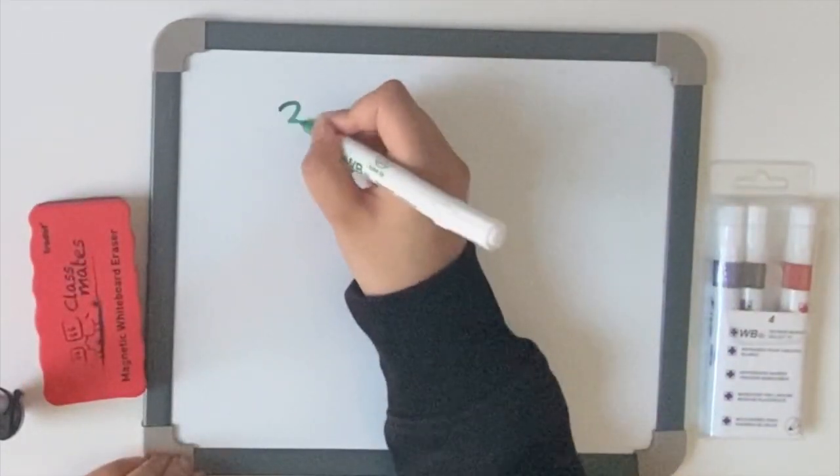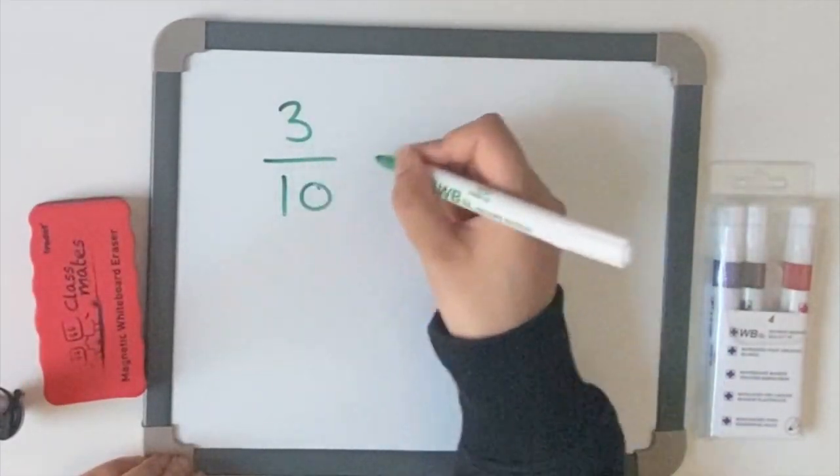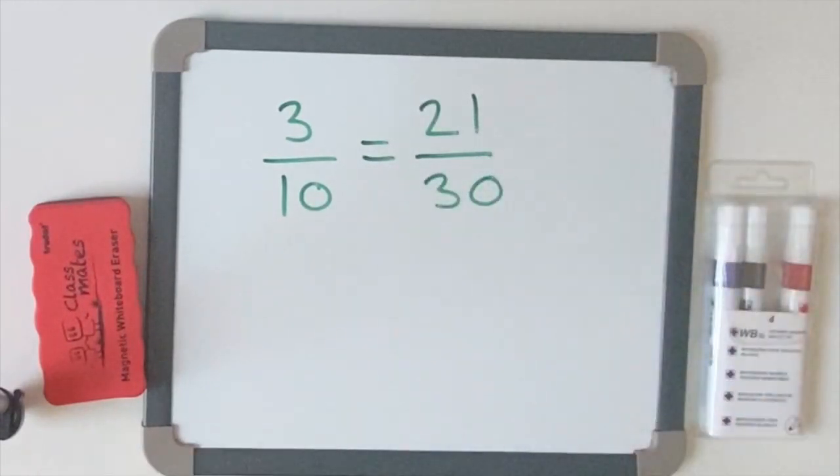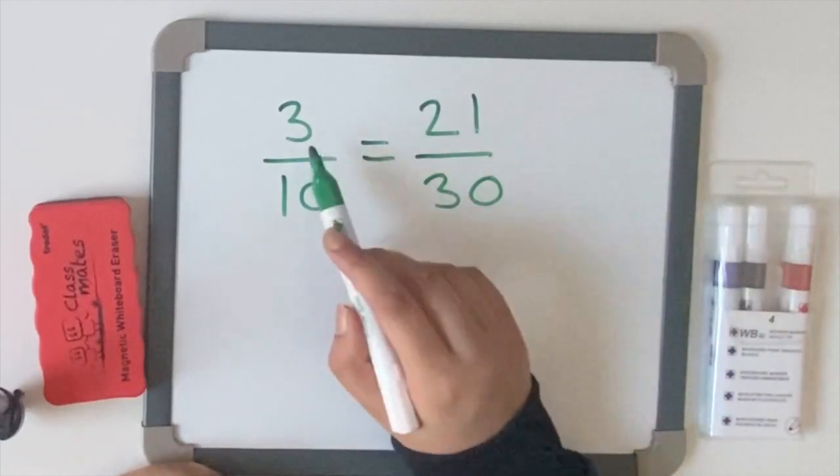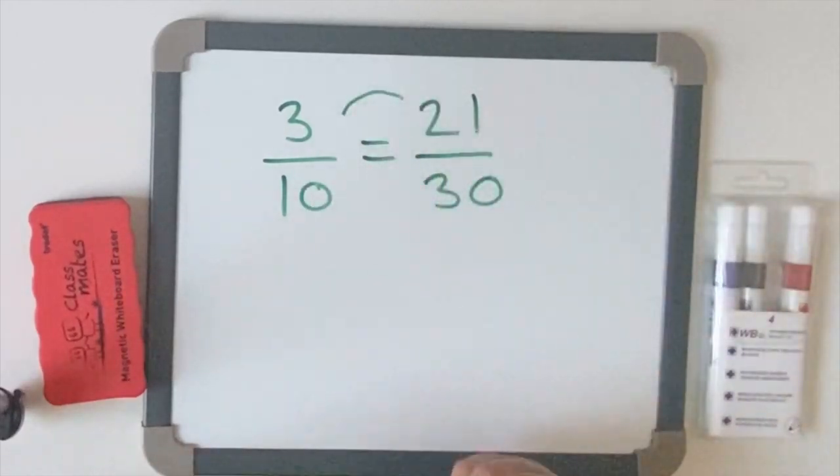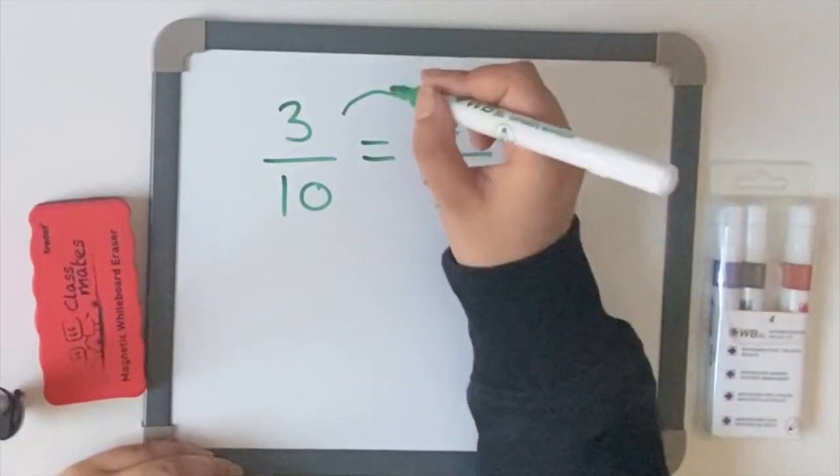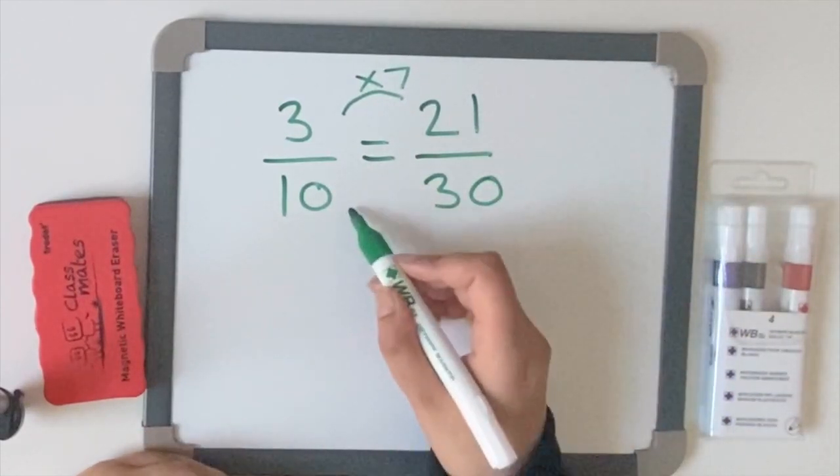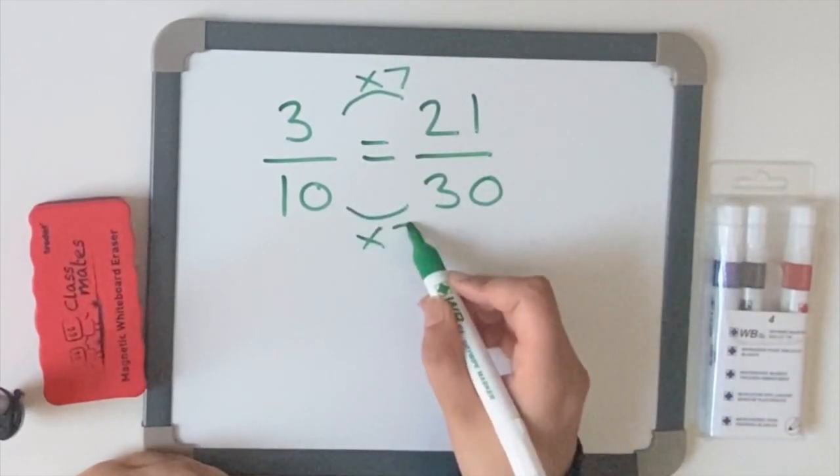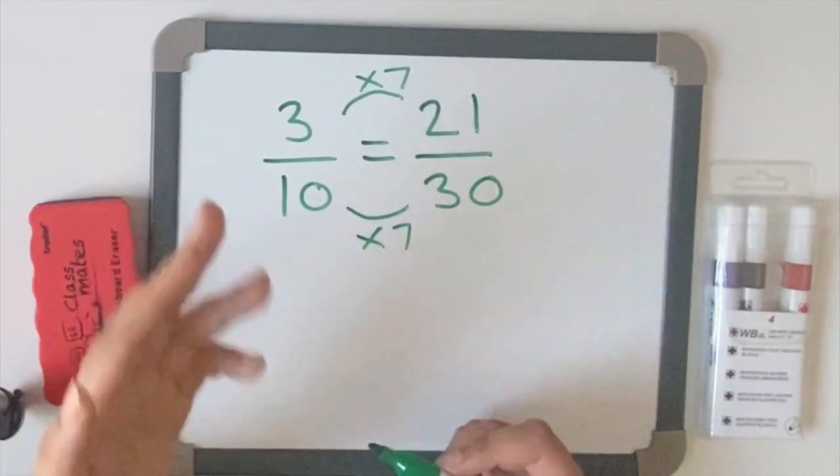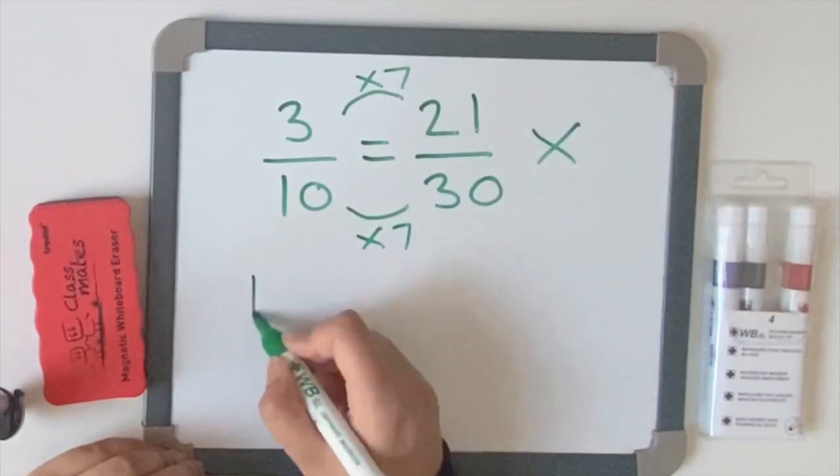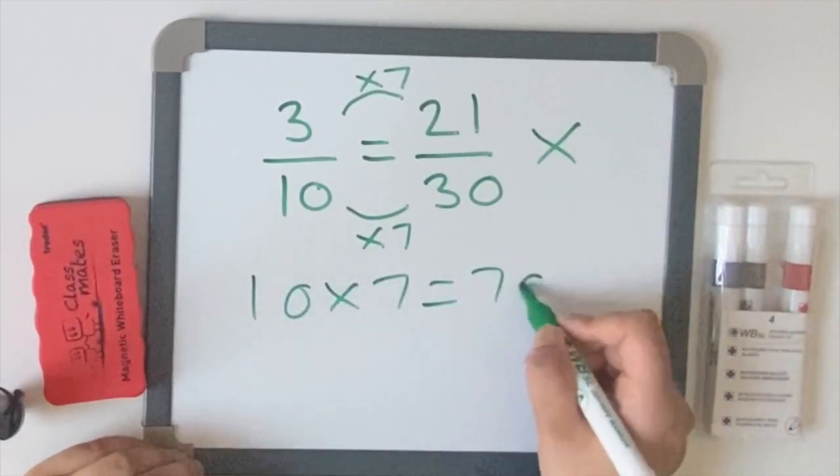And let's move on to the next question. We have three-tenths. Is that equal to twenty-one thirtieths? Well let's see how many times does three go into twenty-one. Three, six, nine, twelve, fifteen, eighteen, twenty-one. It goes into it seven times. What you must do to the top, you must do to the bottom. Ten times seven, well is it thirty? Ten, twenty, thirty, forty, fifty, sixty, seventy. No, so that is not an equivalent fraction because ten times seven equals seventy.